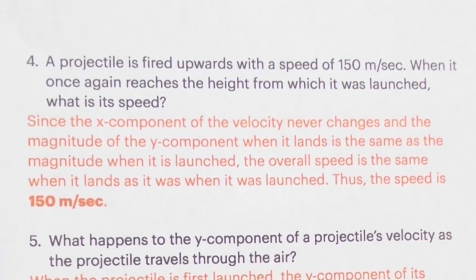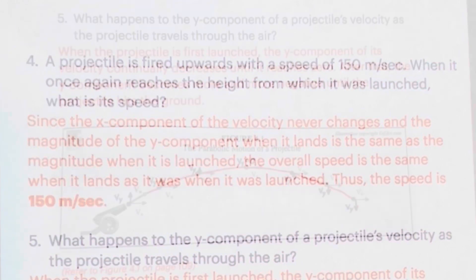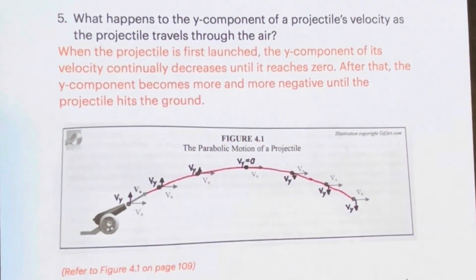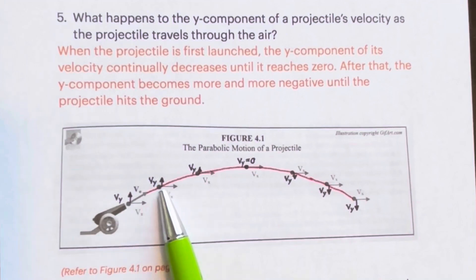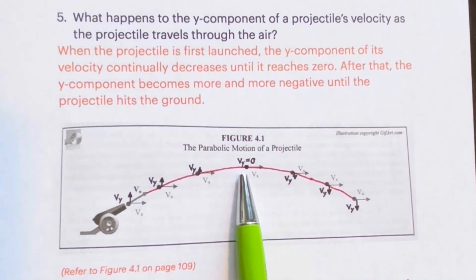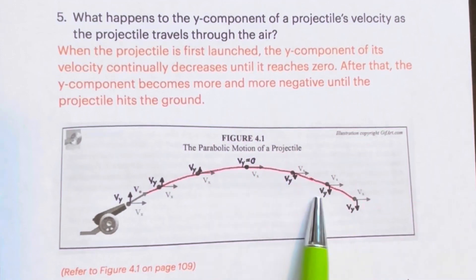What happens to the Y component of a projectile's velocity as the projectile travels through the air? When the projectile is first launched, right here, the Y component of its velocity continually decreases until it reaches 0, which you can see in our parabolic motion. After that, the Y component becomes more and more negative until the projectile hits the ground.